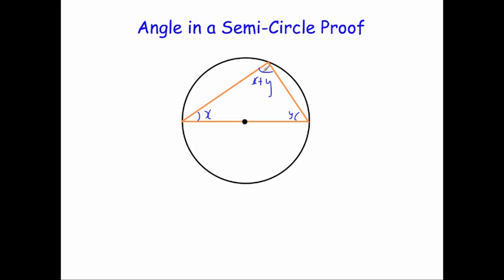We've got this triangle inside of a semicircle with X, Y, and X plus Y. Now we know the angles in a triangle will add up to 180 degrees. So X plus Y plus X plus Y equals 180 degrees.